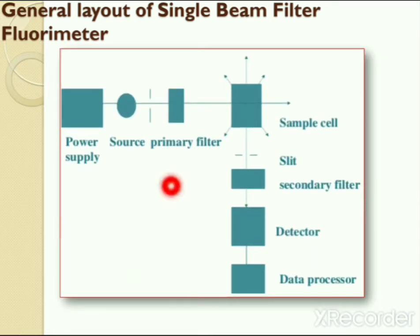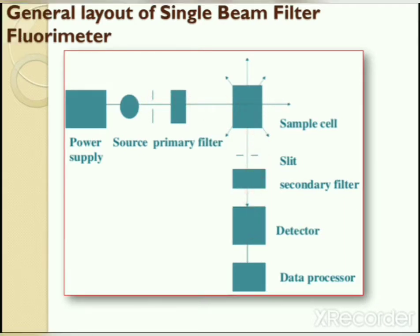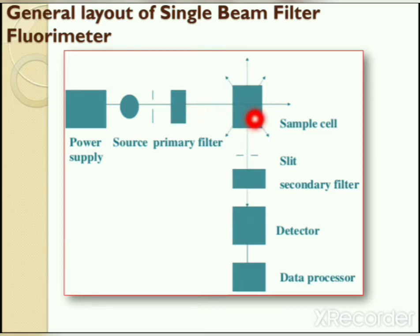Here in this picture you can see the general layout of a single beam filter fluorimeter. It contains a light source, primary filter, sample cell, secondary filter, detector, and data processor arranged in a well-defined manner. The light source produces radiation containing both ultraviolet and visible radiation. This radiation passes through the primary filter, which absorbs visible radiation so that only ultraviolet radiation falls upon the sample. The sample is excited by the ultraviolet radiation and emits ultraviolet plus visible radiation. The secondary filter then absorbs the ultraviolet radiation and only visible radiation produced by the sample reaches the detector.